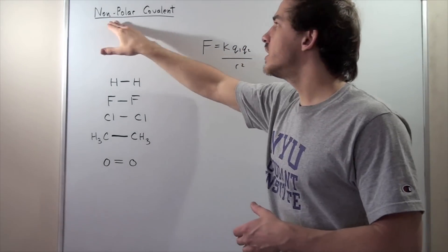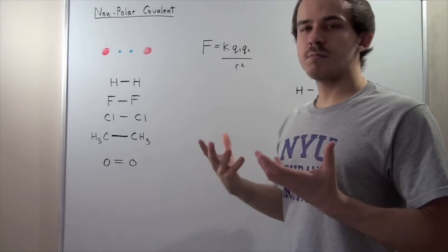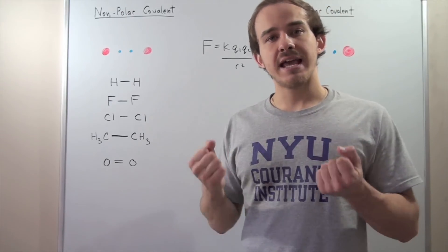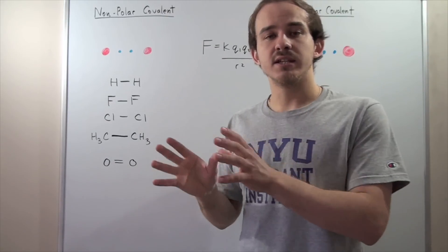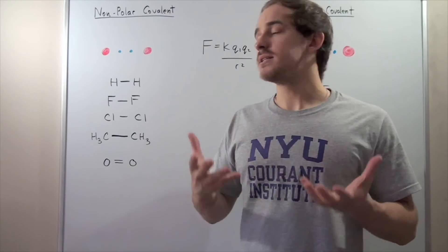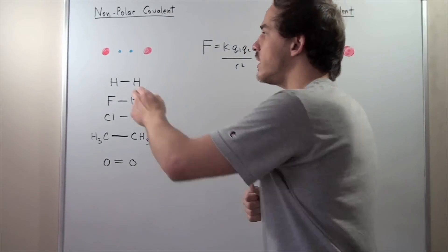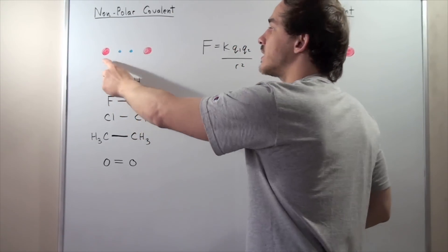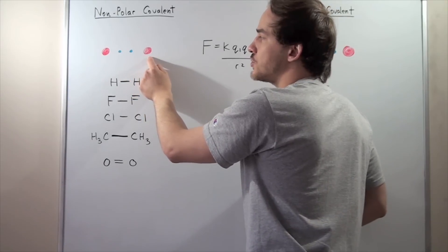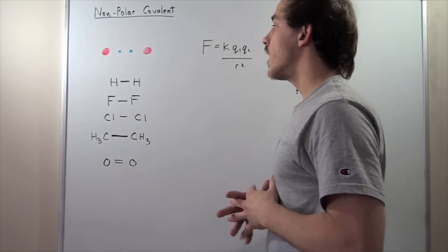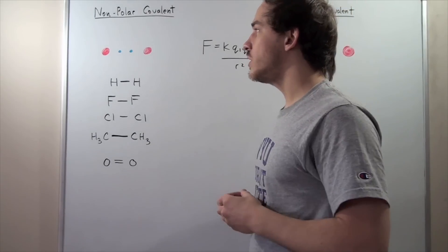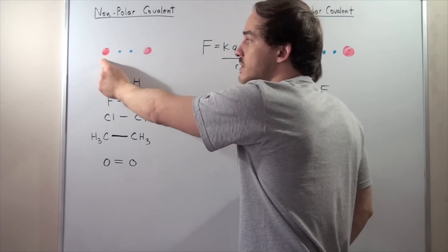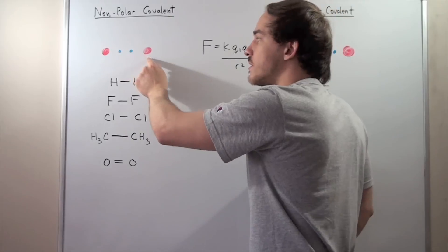Let's begin with the non-polar covalent bond. Suppose we have two atoms that are exactly the same, meaning they have the same amount of protons in the nucleus and the same amount of electrons. Here we have nucleus one with some number of electrons and nucleus two with the same number of electrons, and each atom donates one electron — one coming from this atom and the second coming from this atom.